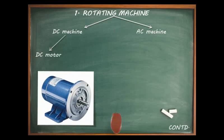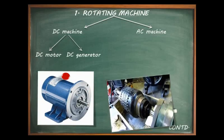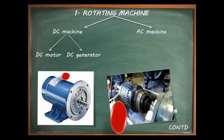DC machines are divided into DC motor and DC generator. A DC motor is a machine which converts electrical energy into mechanical energy, and a DC generator is a machine which converts mechanical energy into electrical energy. As regards fundamental principles, both machines are the same.